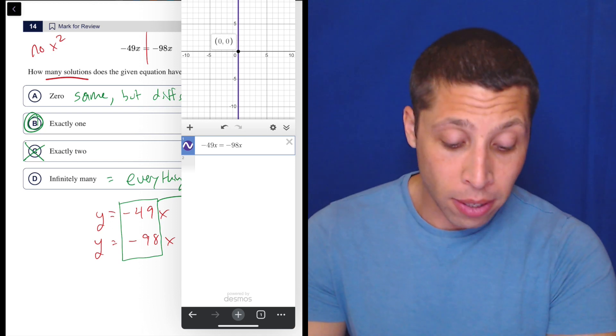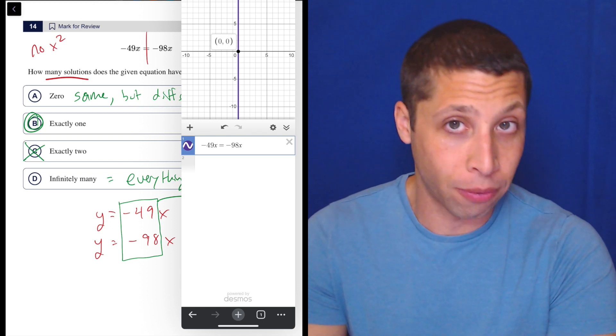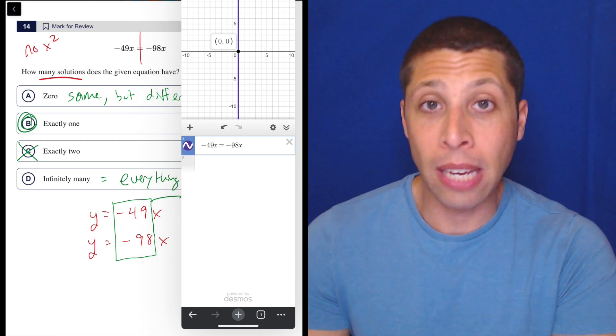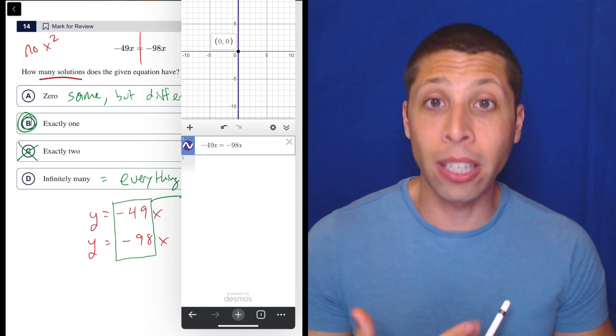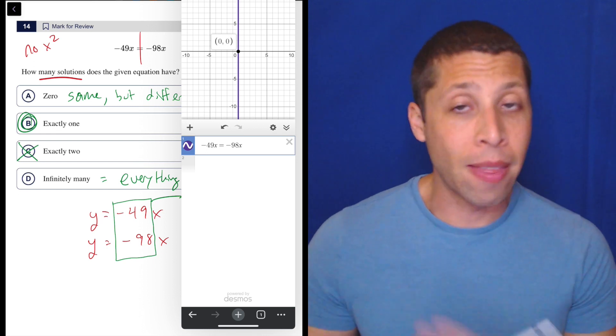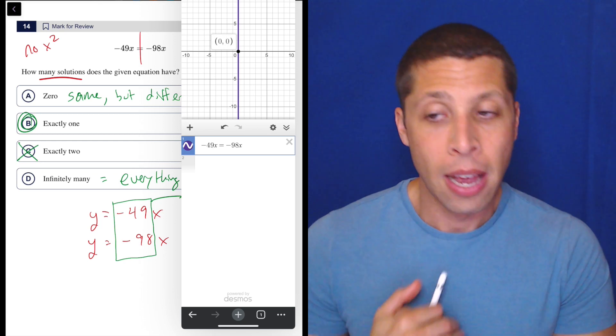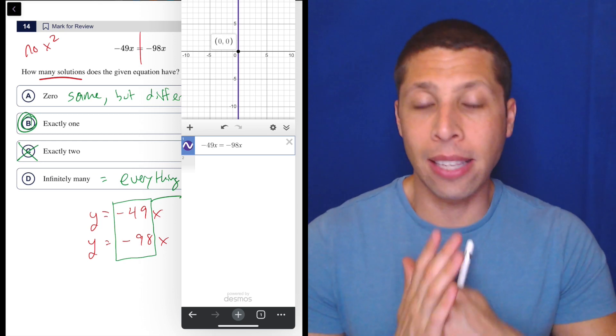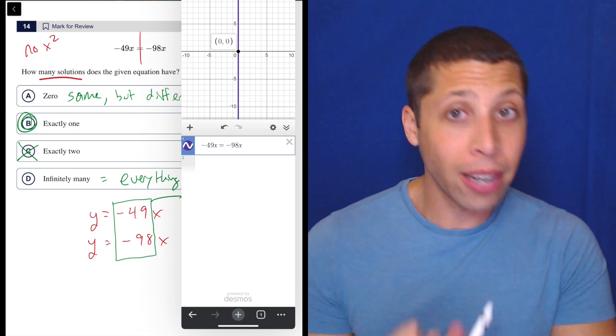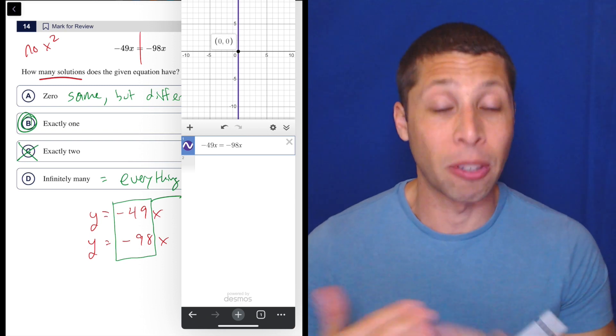We could have graphed these lines as a separate equation. So we could have just done y equals negative 49x and y equals negative 98x, kind of like I did on my page. And that would give us two lines that move in different directions. And eventually they would intersect. You would see that they're not parallel. You would see that they're not the same line. And then you would know that it's got one solution that way. So in that case, we're talking more about intersection points. But again, I don't really like the Desmos method for questions involving number of solutions when we do not have an x squared. When it's just lines, you're better off thinking about the rules and just kind of applying them. It's usually faster.